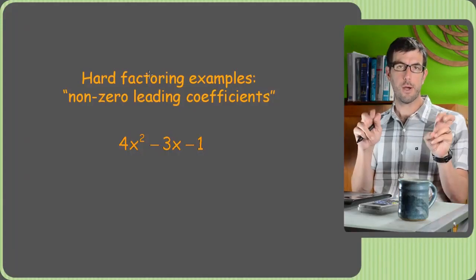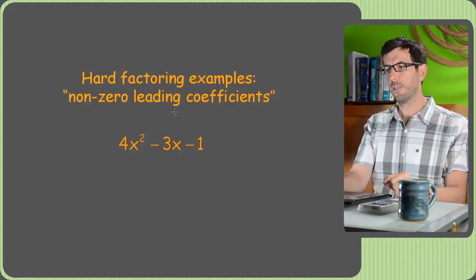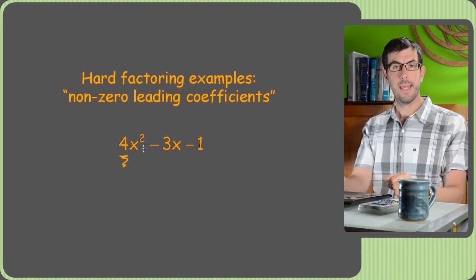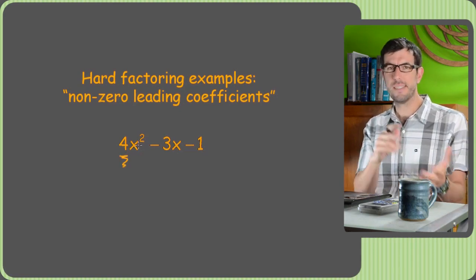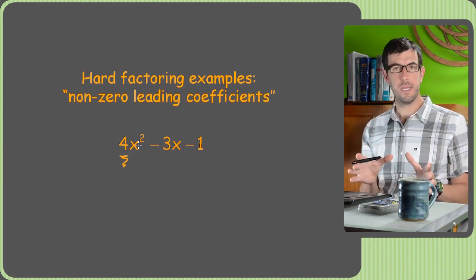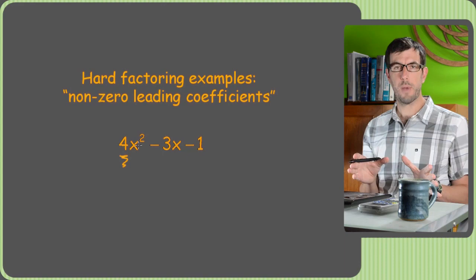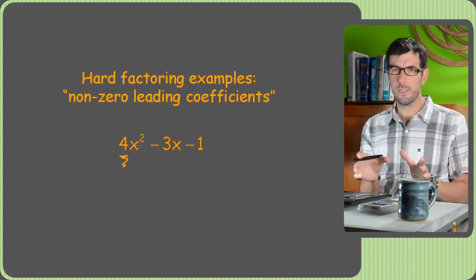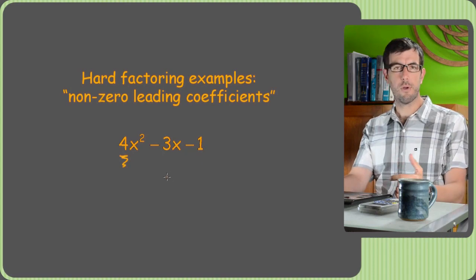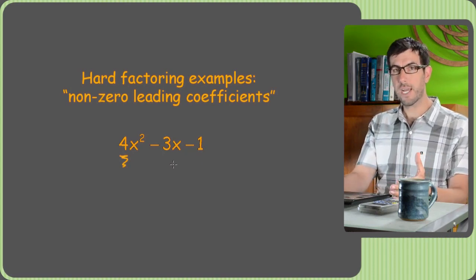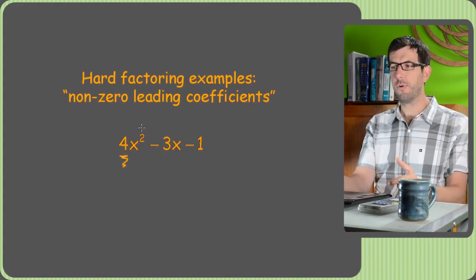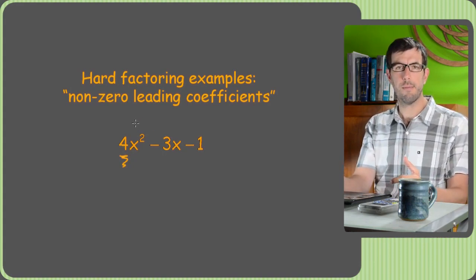Alright, welcome back for what we're going to call hard factoring examples. Now these are the ones where we have the number, in this case 4, in front of the x squared, and that's what just makes things trickier because it kind of messes up the math on coming up with that middle term.